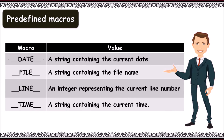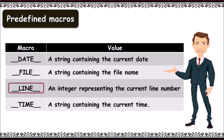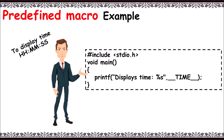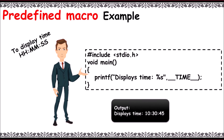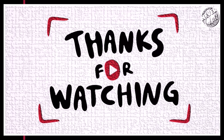Predefined macros include: __DATE__ contains the current date, __FILE__ contains the filename, __LINE__ is the line number, and __TIME__ is the current time. An example to display time using predefined macros: in printf we use __TIME__, which represents a string with the current time. The output displays the time as 10:30:45.